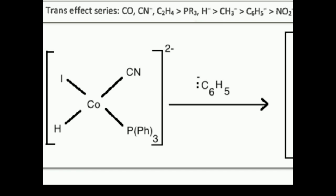What I need to do is look at the four ligands already on the square planar complex and figure out which one is farthest to the left or has the greatest trans effect. I can pretty quickly see that it's CN.